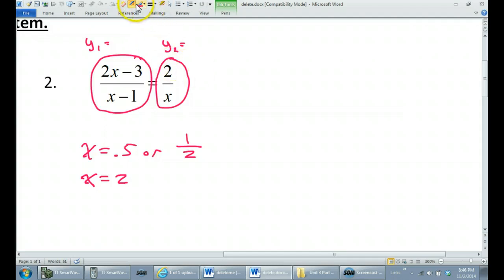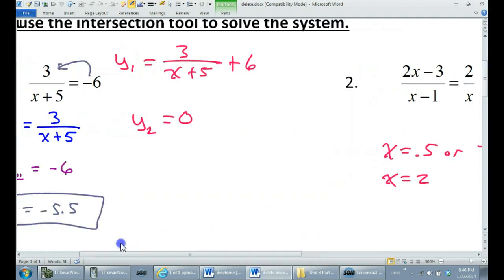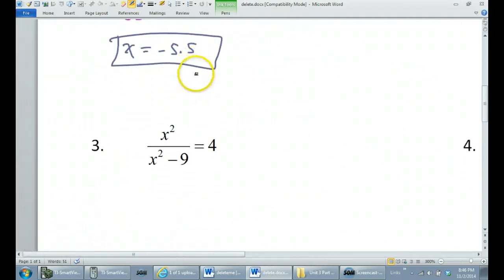Alright? I'm not going to do the calculator thing all over again. But please understand that I could have typed it in this way with y1. If I wanted to get 0 on one side, it would be a matter of subtracting this fraction from both sides. So I could have typed it in as 2x minus 3 over x minus 1, and then minus 2 over x. And then I could have let y2 be 0. Either way, it's all good. I'm not going to do it again though.